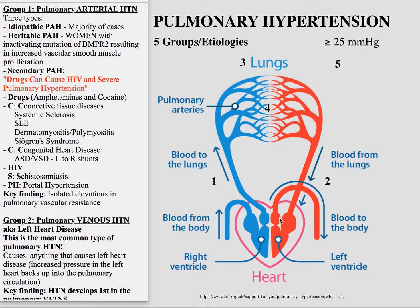This is your pulmonary circulation. When I think about the causes of pulmonary hypertension, I use this to ask where things can go wrong. One place is obviously where blood is going to the lungs — that's Group 1, pulmonary arterial hypertension. Another place is the blood leaving the lungs — that's Group 2, pulmonary venous hypertension. Group 3 could be the lungs themselves — underlying lung disease or hypoxia.